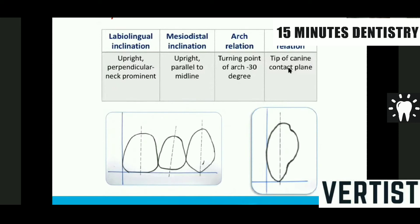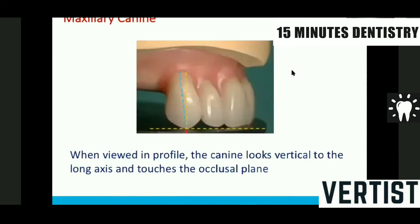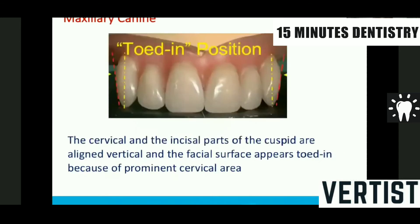The occlusal plane relation: the tip of the canine should contact the occlusal plane. When viewed from the profile, the canine looks exactly vertical — or some authors say slightly mesially inclined, but for practical purposes we keep it upright. From the front the canine should look like a toad-in position, meaning there is a cervical bulge, the neck goes into the occlusal rim, and the tip is also curved — this bulge at the cervical is called the toad-in position.